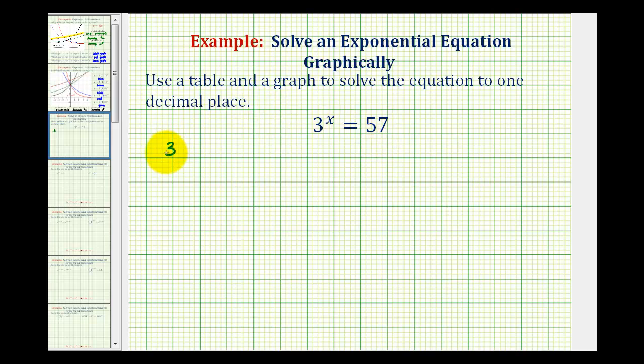But we should recognize that 3 to the third would be equal to 27, and 3 to the fourth would be equal to 81, so the value of x would have to be somewhere between 3 and 4.